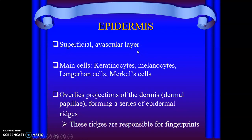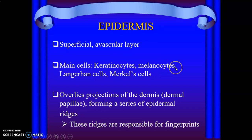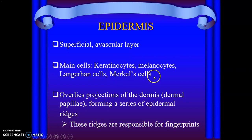The epidermis is a superficial layer and it's avascular — no blood vessels within the epidermis. A very common question: name four cells in the epidermis and state their functions. We have keratinocytes, which majorly form the epithelium and protect from desiccation. Then melanocytes for melanin and skin color. Langerhans cells are antigen-presenting cells — they're immune cells. Merkel cells are the mechanoreceptors for touch.